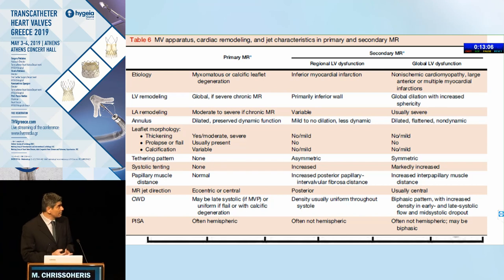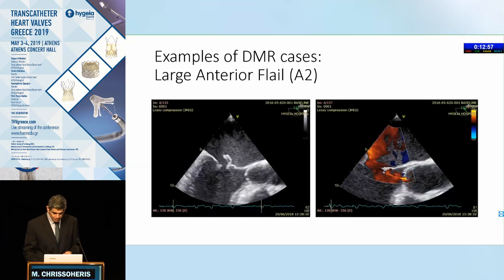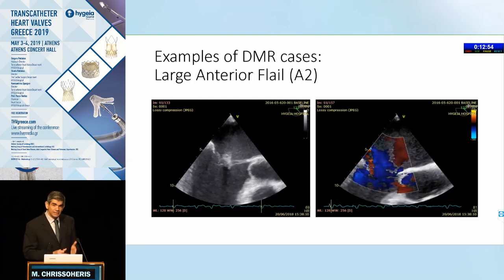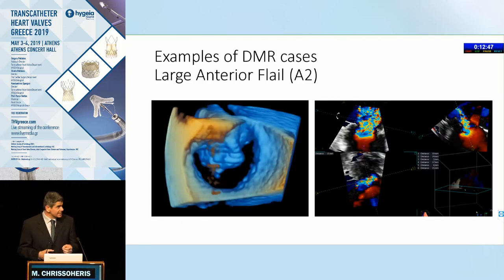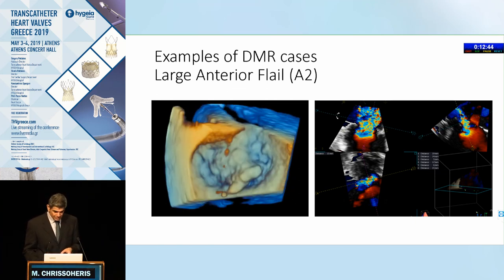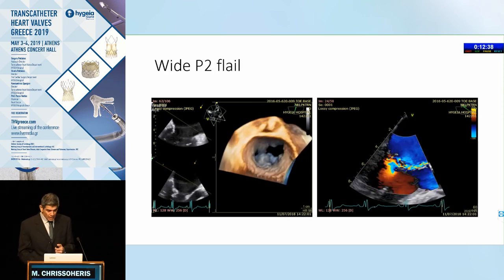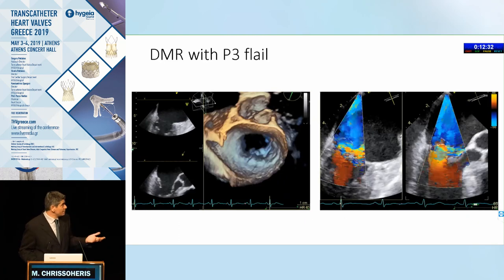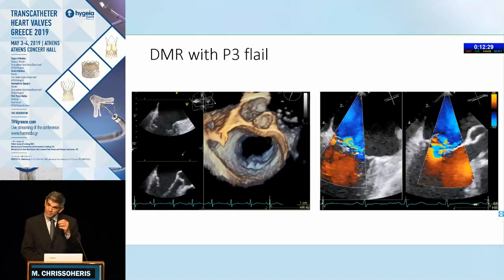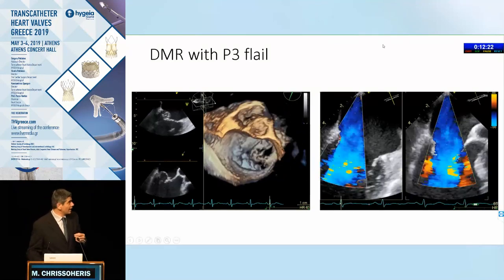When looking at primary and secondary MR, there are multiple areas we could examine regarding the mitral valve apparatus, cardiac remodeling, and associated characteristics. But nothing beats three-dimensional echocardiography in assessing and understanding the problem of the mitral valve — whether a large anterior flail, a complex P2 flail with ruptured cords, a more simple localized P2 flail, or a P3 flail. These images are very crisp and easy to understand for surgeons, interventional cardiologists, and everybody to be on the same page.